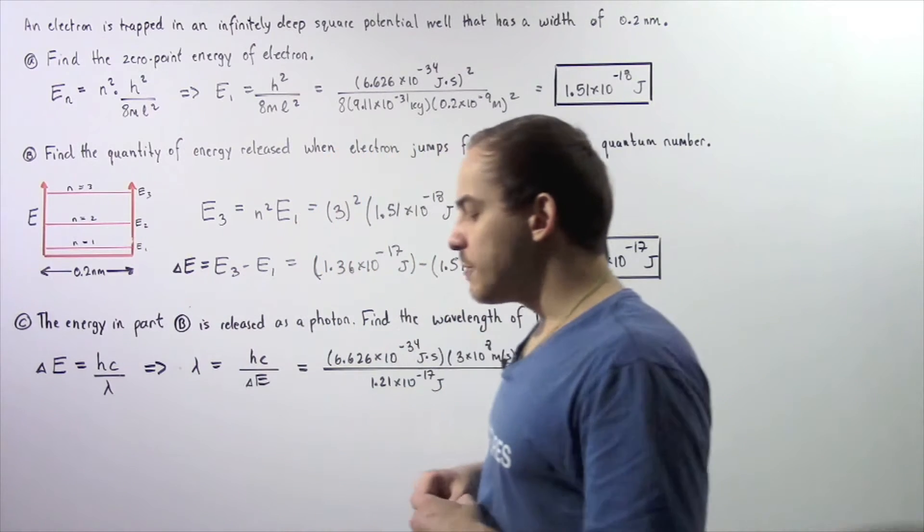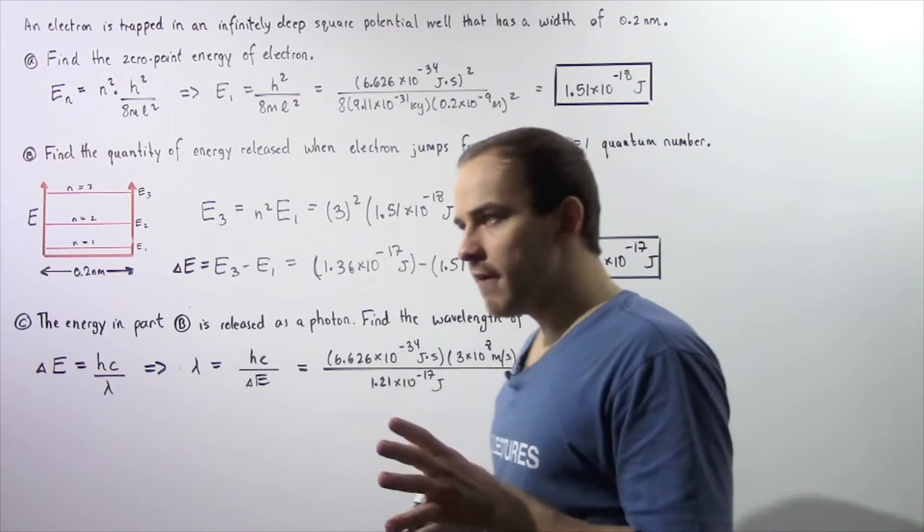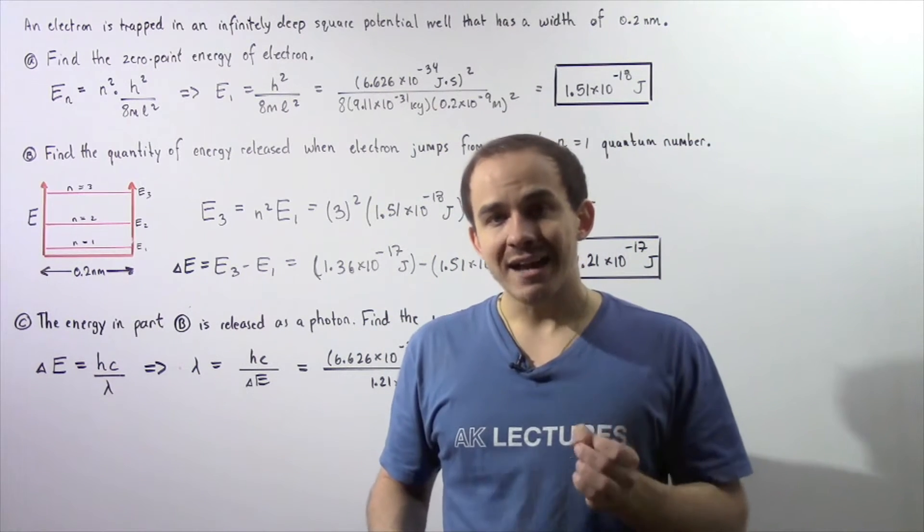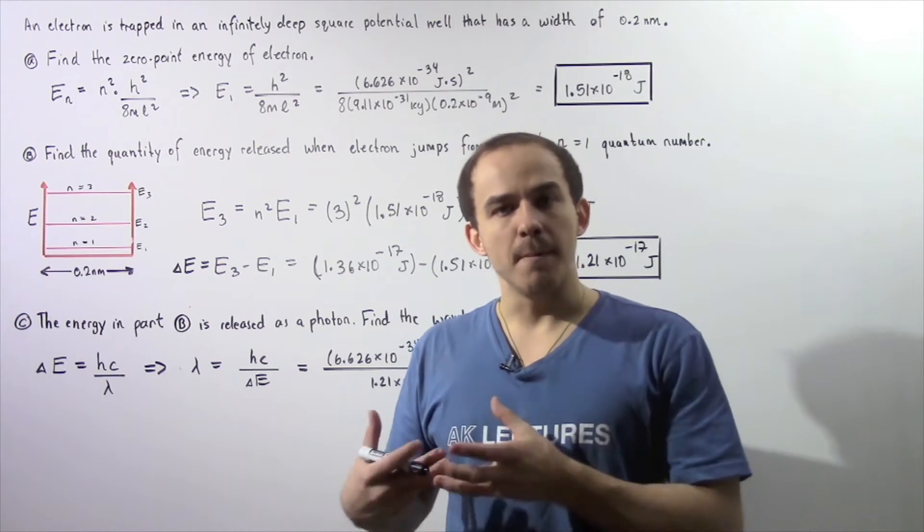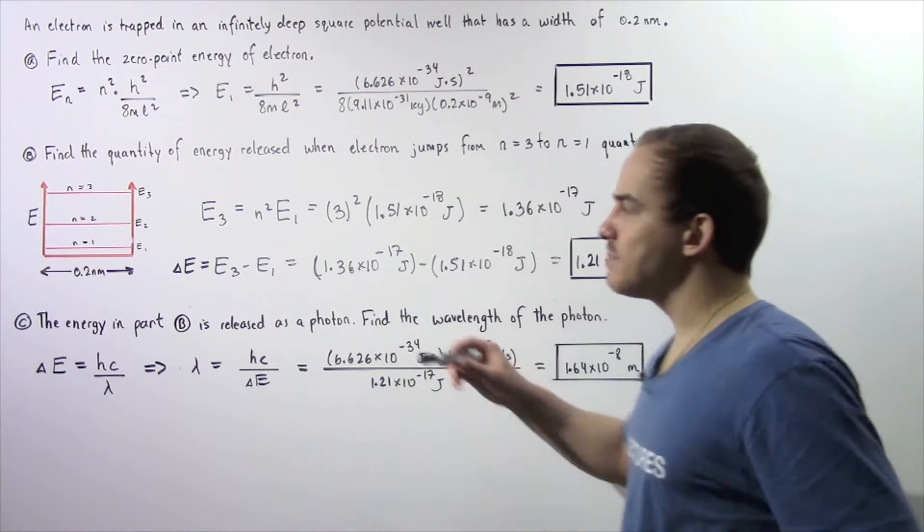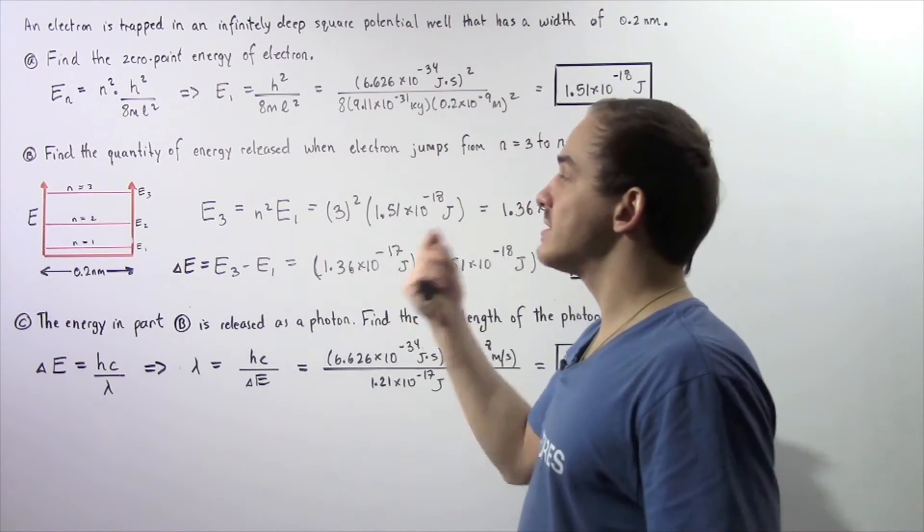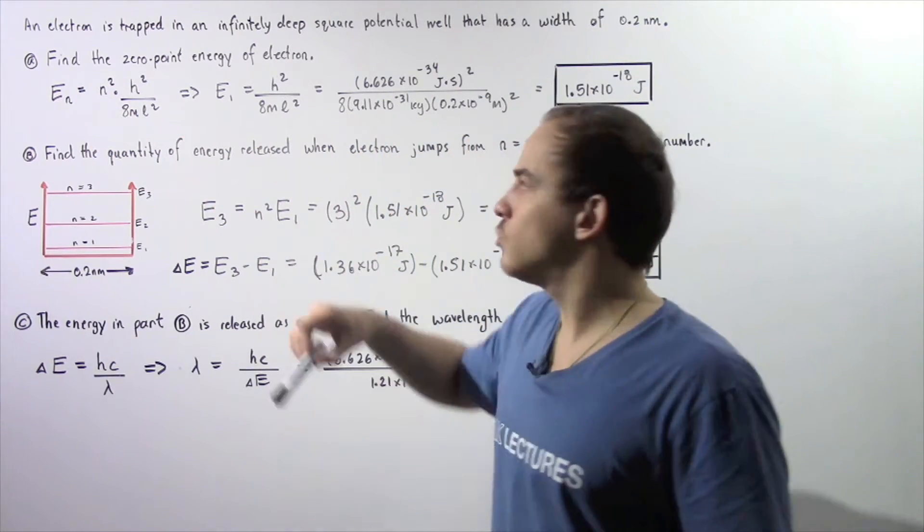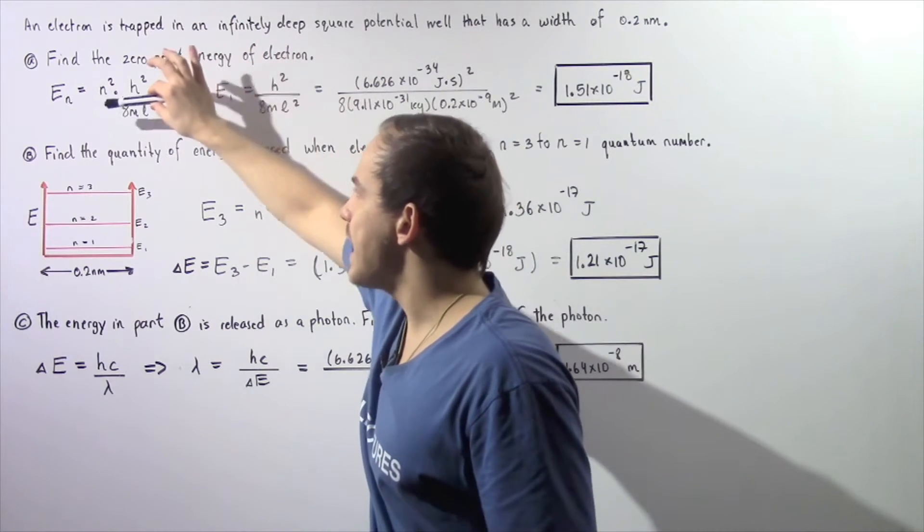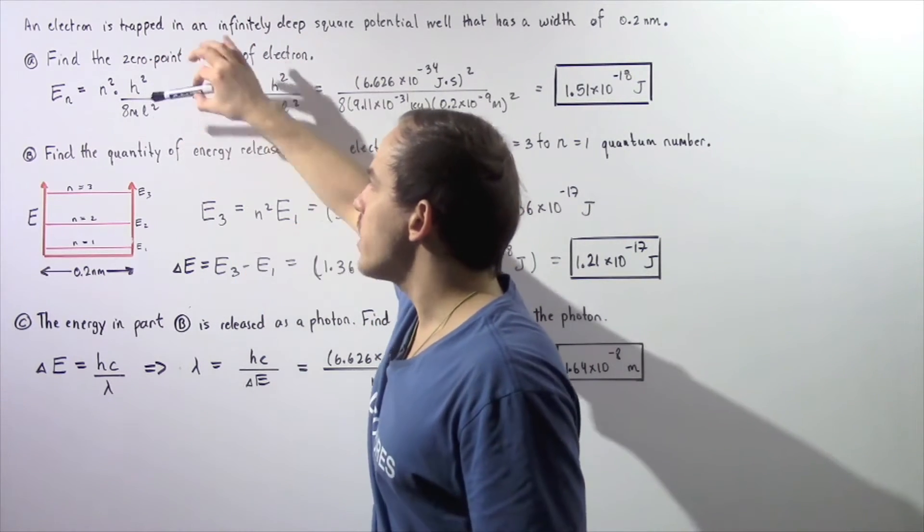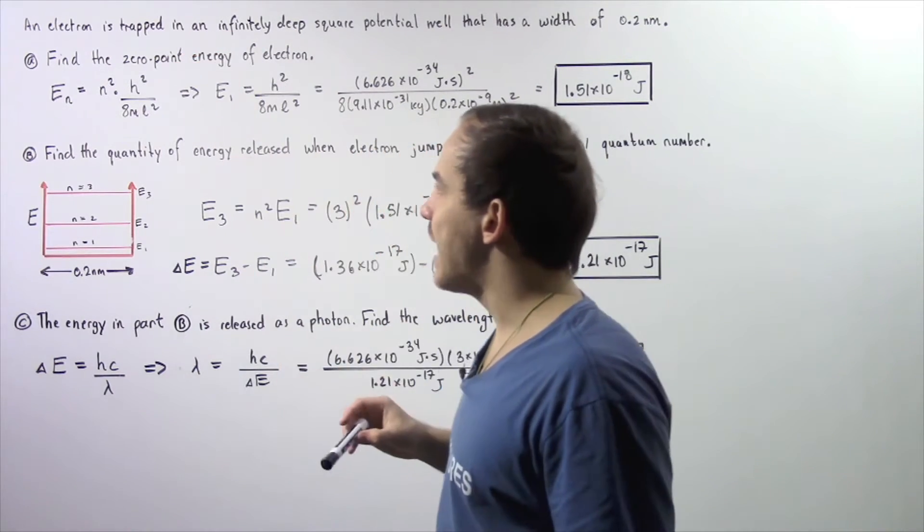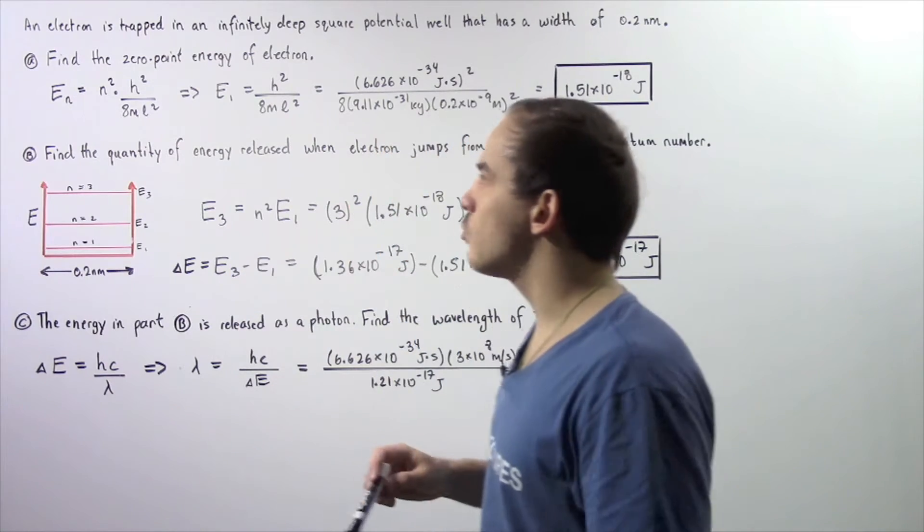Let's begin with part A. We want to find something known as the zero-point energy. The zero-point energy is simply the lowest possible amount of energy that the electron can have. Generally speaking, the energy of our electron trapped inside a rigid box is given by this equation: n squared multiplied by h squared divided by 8ml squared, where l is the width of our rigid box, m is the mass of that particle, h is Planck's constant, and n is the quantum number.